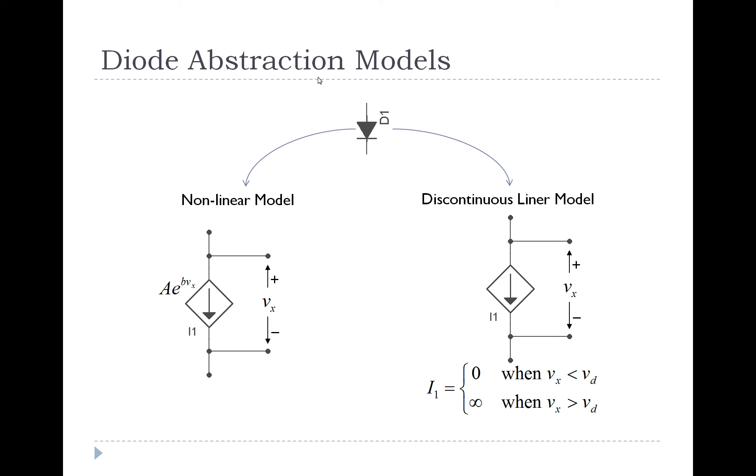Remember that an abstraction model is just a model that we use that may not capture all of the physics of what's happening in the system, but it allows us to at least capture the electronic behavior of the diode in this case. And we actually have two possible models that we can use for a diode abstraction model.